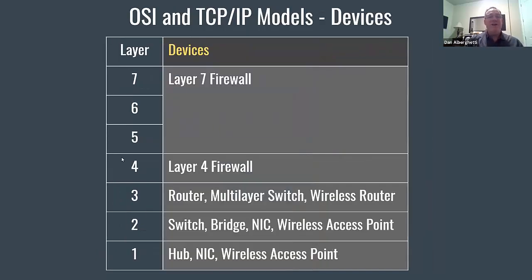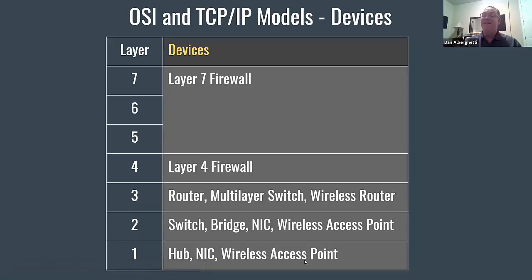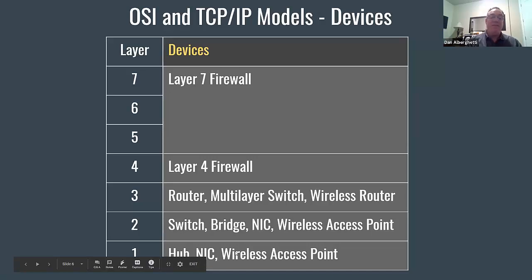These layers also correspond to devices. At layer one, this is the layer of hubs, network interface cards, and wireless access points. More importantly, layer one is the layer of the media — the wire, wireless signals, fiber optic wire, and Ethernet copper cable. At layer two, a device specific to that layer would be a switch.